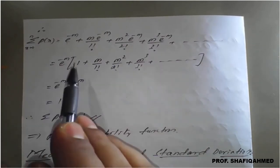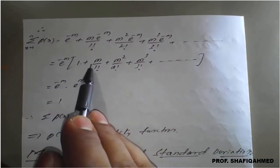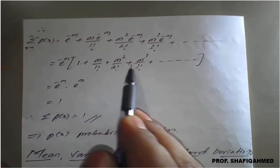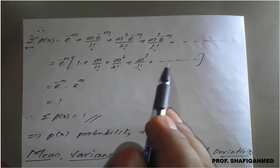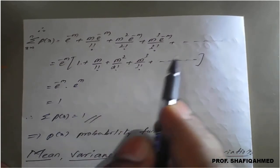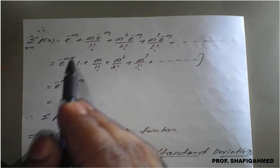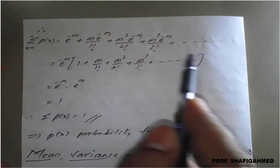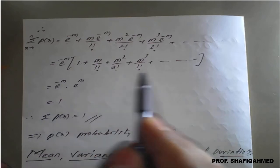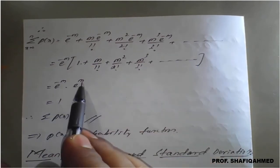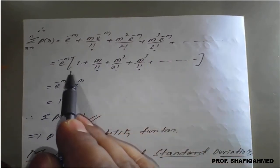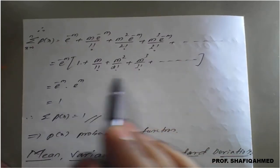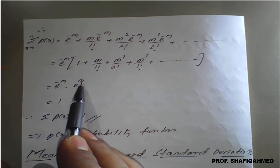Take it outside. Left is what? 1 plus m divided by 1 factorial plus m square divided by 2 factorial plus m cube divided by 3 factorial and so on. This e raised to m as it is, but this is according to Maclaurin series - according to Maclaurin series, or I can say that the series result of e raised to m. This bracket has the result; this is a series result of e raised to m.